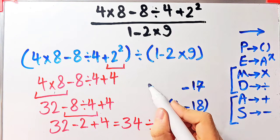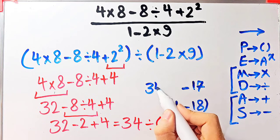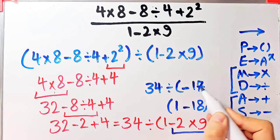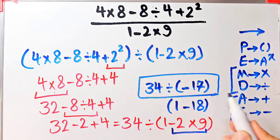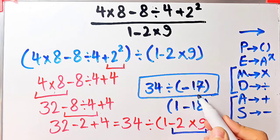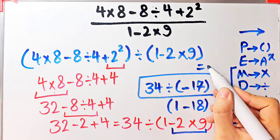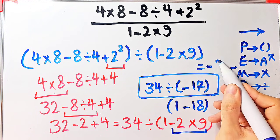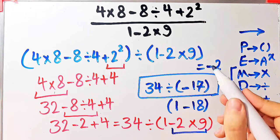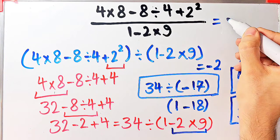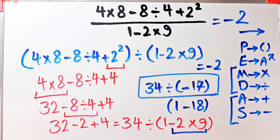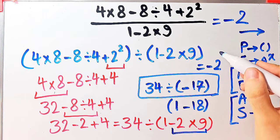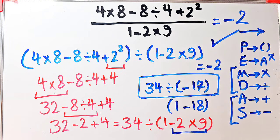Now the question is 34 divided by negative 17. 34 divided by negative 17 equals negative 2, and the final answer of this question equals negative 2. If you want to get the right answer you must follow the PEMDAS rule. Thanks for watching, please subscribe to the channel and leave a comment. Goodbye!